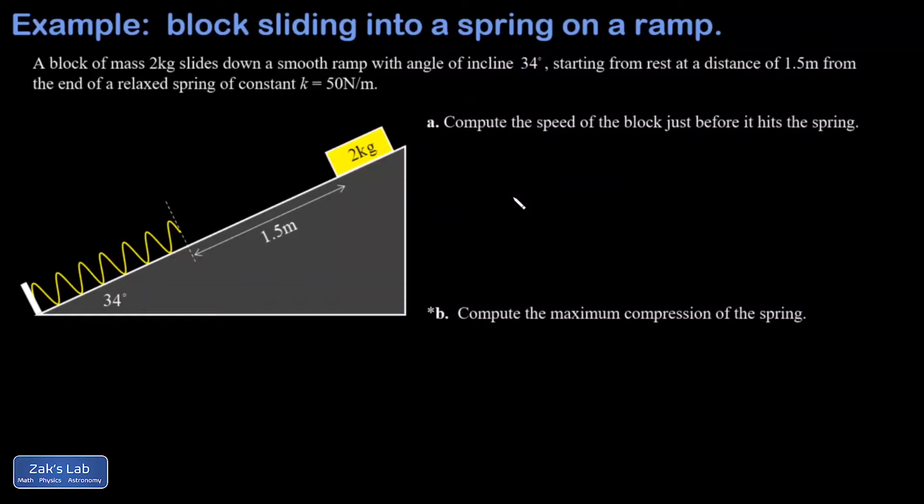In this video we have a block sliding down a smooth ramp, in other words we don't have to think about friction. We're given the angle of incline, and the first thing we want to do is find the speed of the block just before it hits a spring that's laying on the ramp, and we're going to use energy conservation for that.